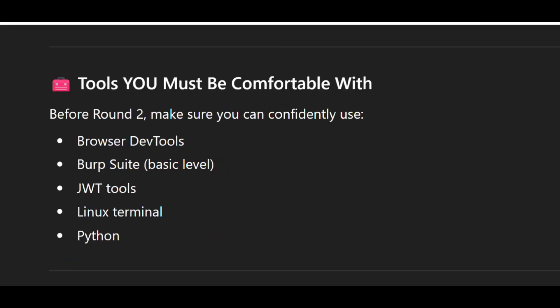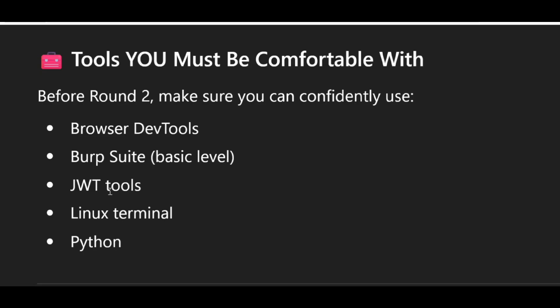Tools you must be comfortable with before round 2: make sure you can confidently use browser dev tools and Burp Suite at a basic level. Learn how to use JWT tools — JSON web token tools. Learn how to use the Linux terminal — very important because you need to run commands there. And learn Python scripting because it will save your time.